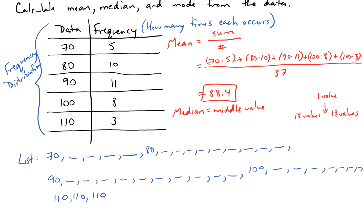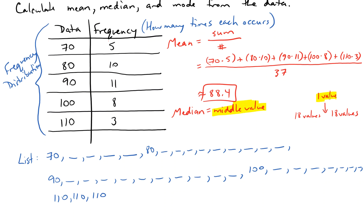So my median, my middle value will be this one value here, which happens to be the 19th value when I list them in order. So now I just have to figure out my 19th value. So I've got 5 70s, 10 80s. So this is my 15th value.